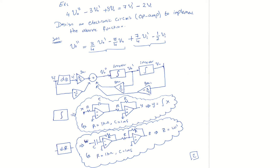Now we have this example: V output double prime minus V output prime plus (5/4) V output equals 7 V input prime minus 2 V input. Design an op-amp circuit to implement this function. We always put the highest order on one side and the remaining parts on the other. So the output side has V output double prime. How many integrators do we need to reach V output? We need two integrators — the first and the second.